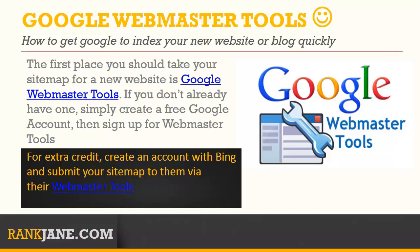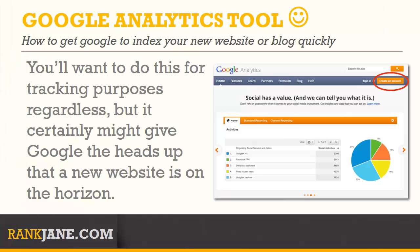Submit Sitemap to Google Webmaster Tools. The first place you should take your sitemap for a new website is Google Webmaster Tools. If you don't already have one, simply create a free Google account, then sign up for Webmaster Tools. Add your new site to Webmaster Tools, then go to Optimization, Sitemaps, and add the link to your website's sitemap to notify Google about it and the pages you've already published. For extra credit, create an account with Bing and submit your sitemap to them via their Webmaster Tools.